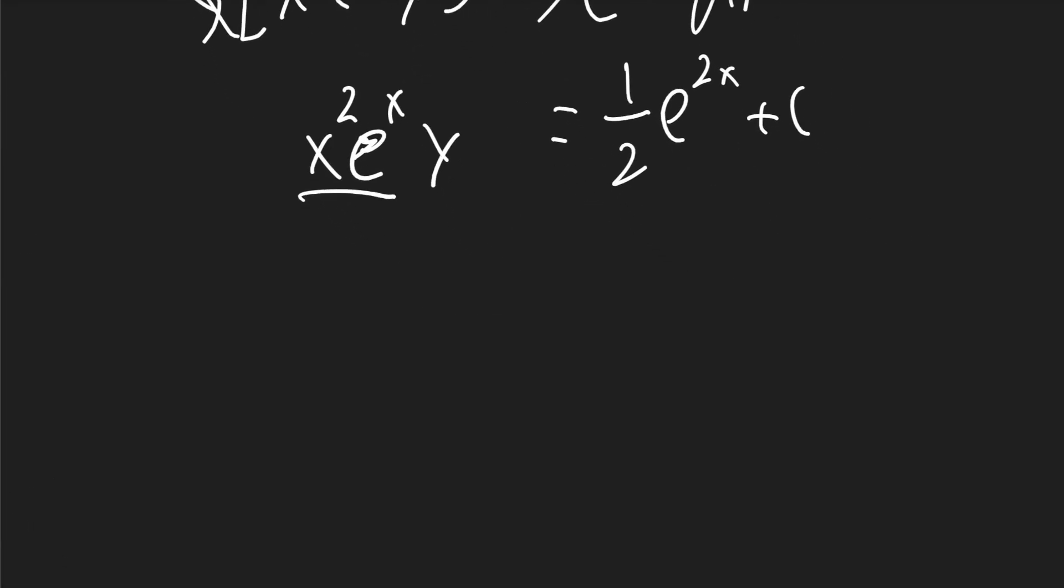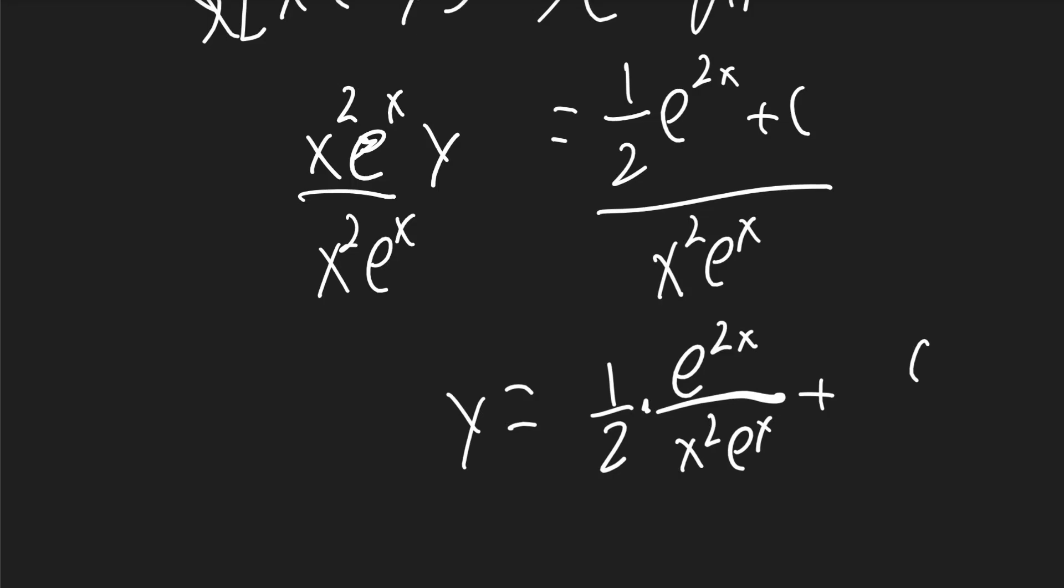To get y by itself, we can just divide both sides by x squared e to the x. So y will be equal to 1 half times e to the 2x over x squared e to the x plus c over x squared e to the x.